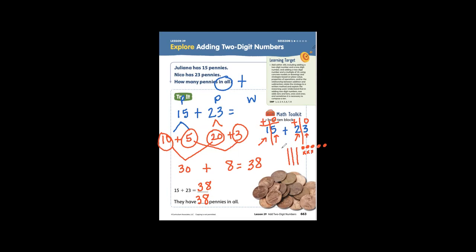Now we count our tens: 10, 20, 30, and 8 ones. 30 plus 8 is 38.